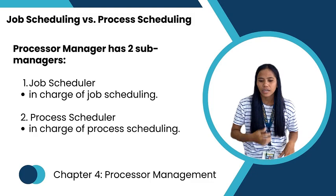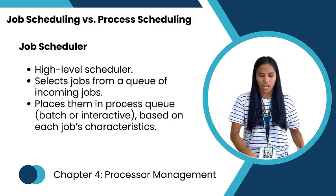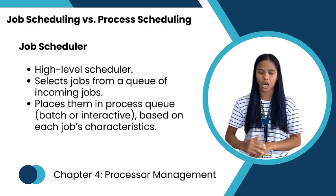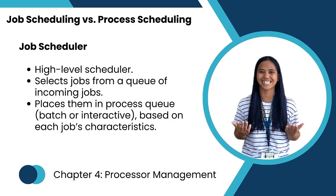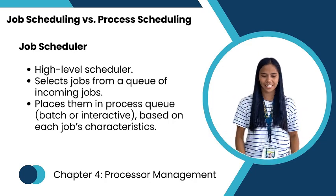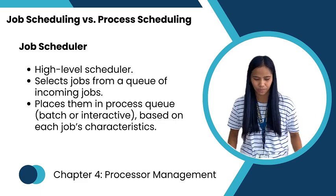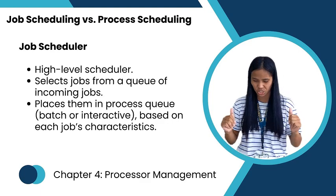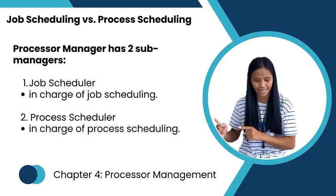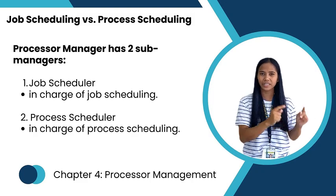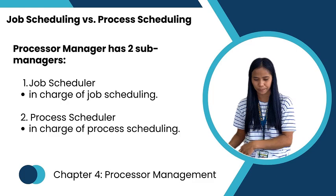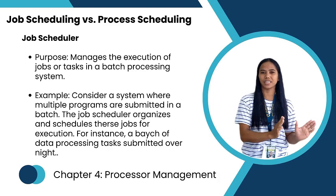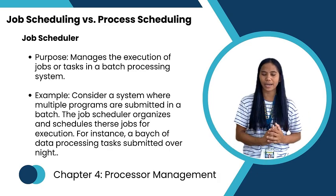The job scheduler is in charge of job scheduling. The purpose of the job scheduler is to manage the execution of jobs in a batch processing system. For example, consider a system where multiple programs are submitted in a batch — the job scheduler organizes and schedules the jobs for execution, such as a batch of data processing jobs submitted overnight.